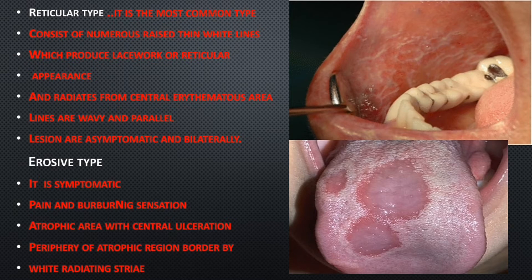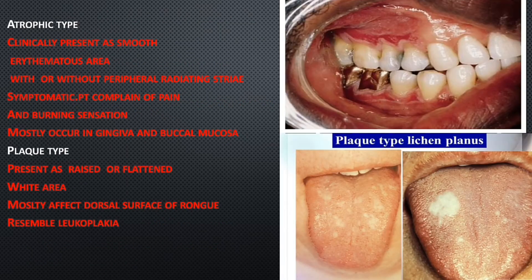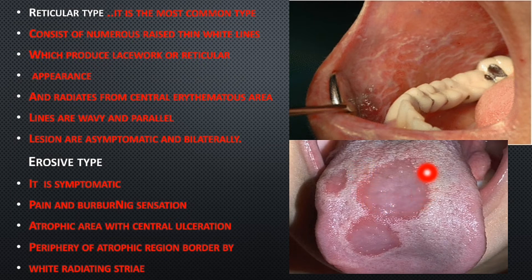The erosive type is symptomatic, presenting with pain and burning sensation. It features an atrophic area with central ulceration, as visible in the picture. The periphery of the atrophic region is bordered by white radiating striae, as seen in the image where the area is bordered by white striae.